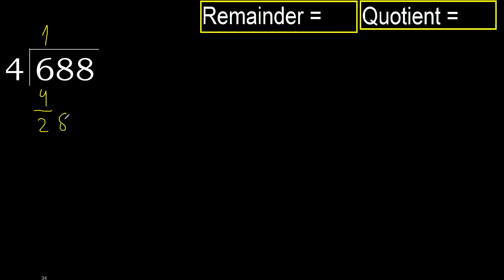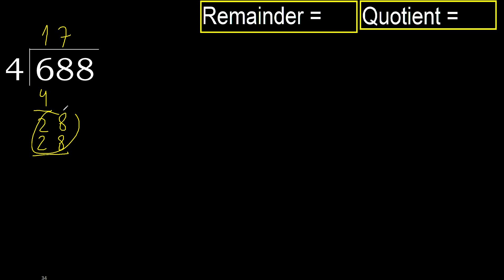Next: bring down 8, giving 28. 4 multiplied by 8 is 32, which is greater. Multiply by 7 is 28, which is not greater. Subtract: 28 minus 28 equals 0.